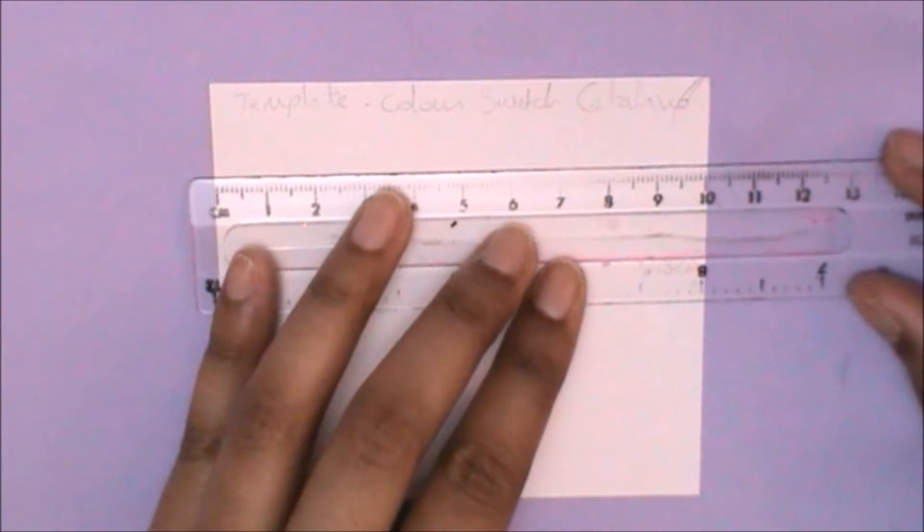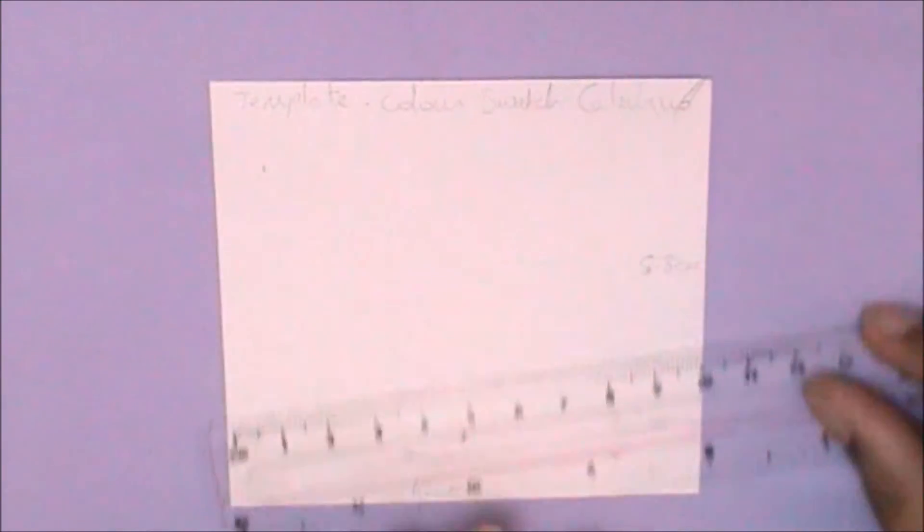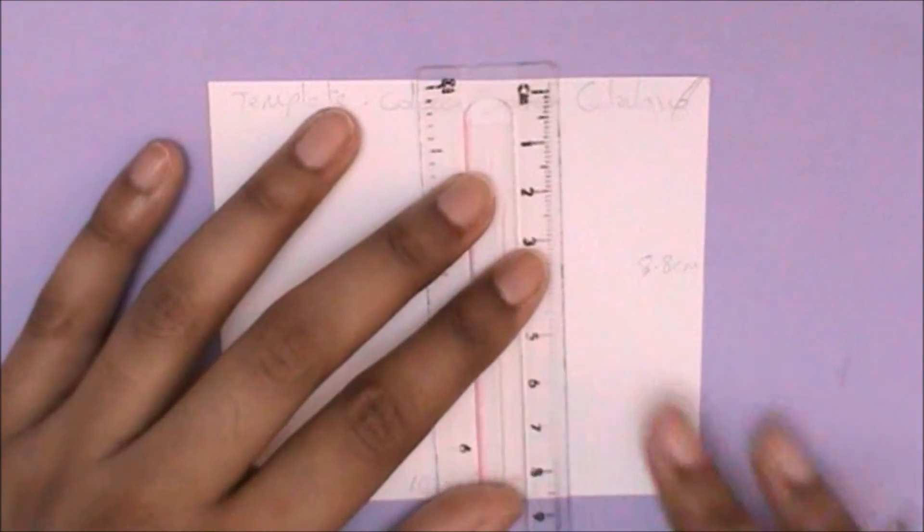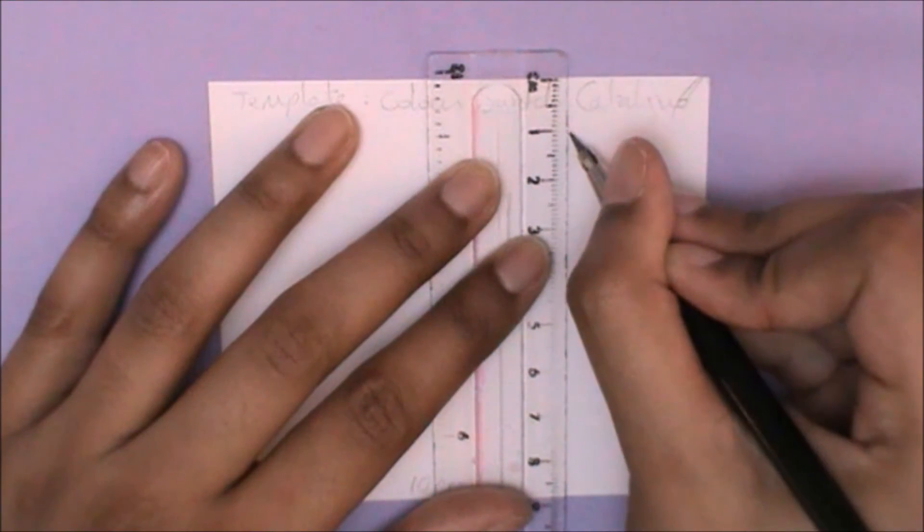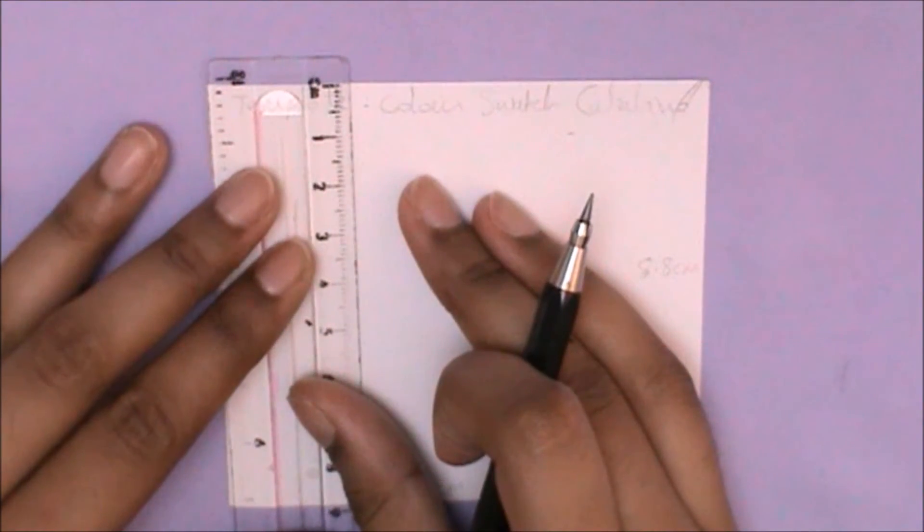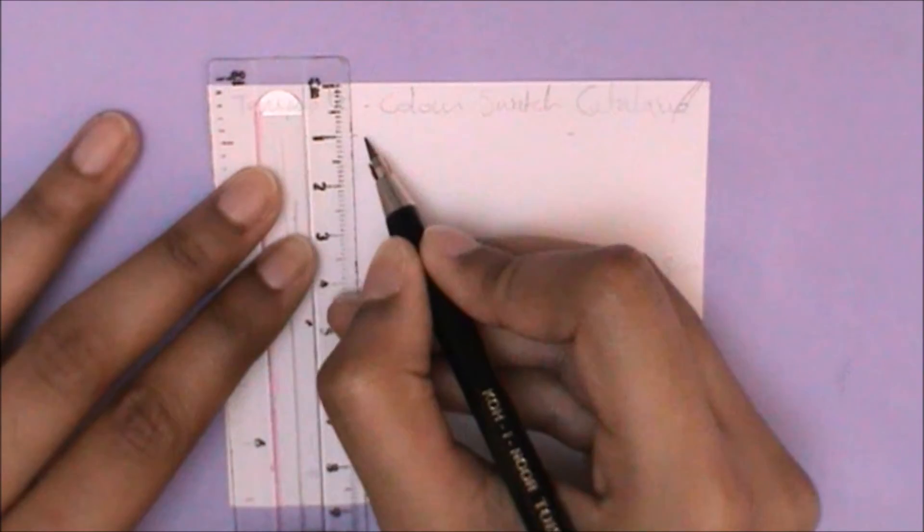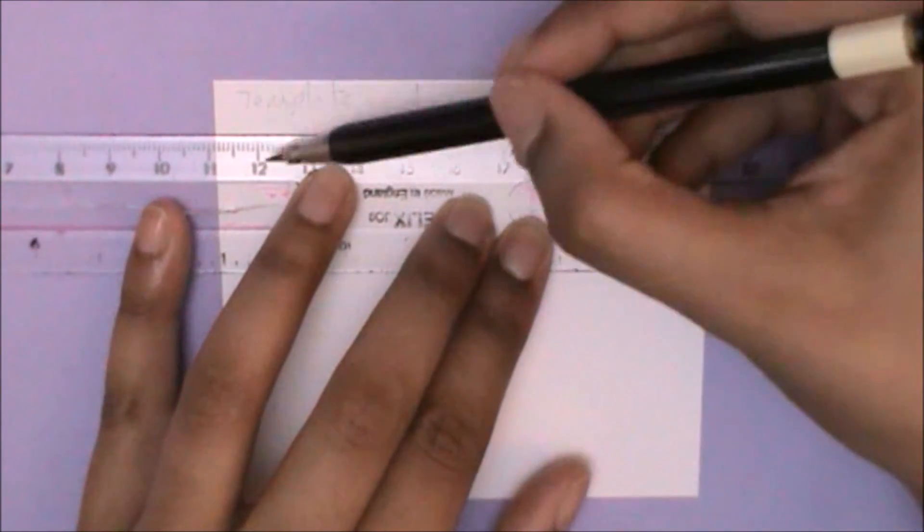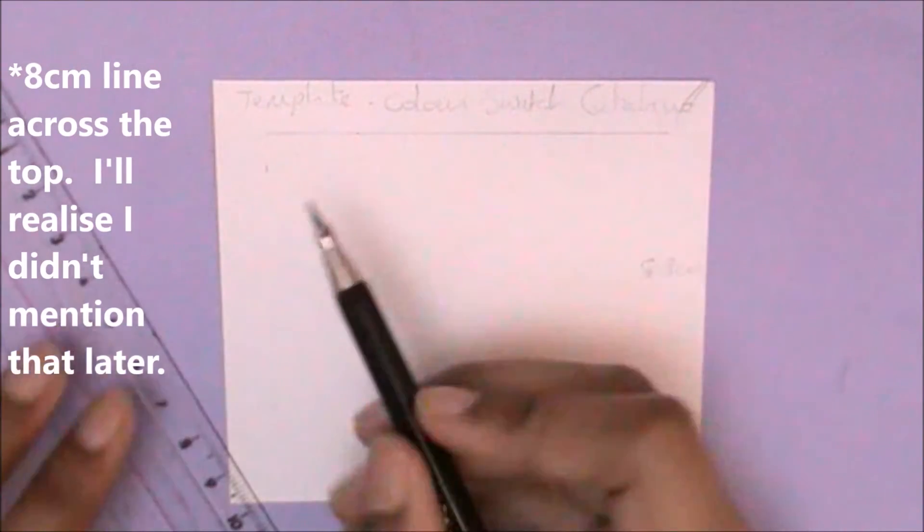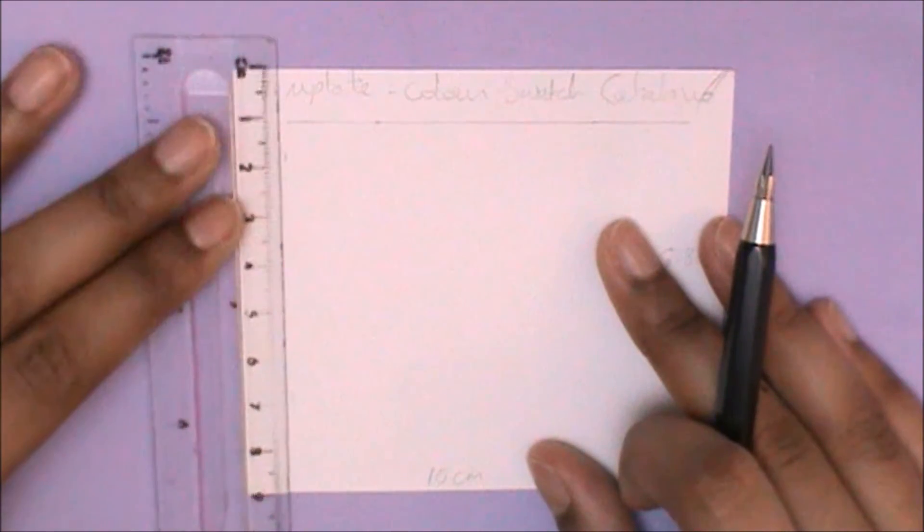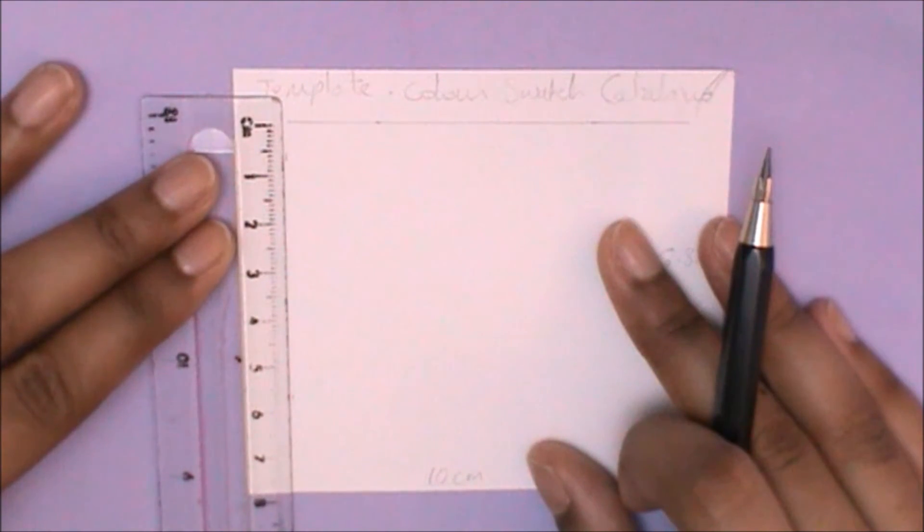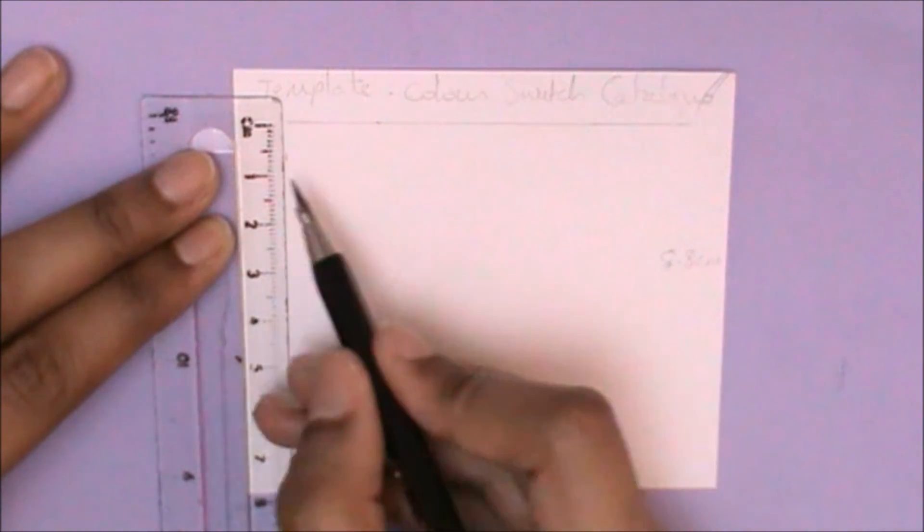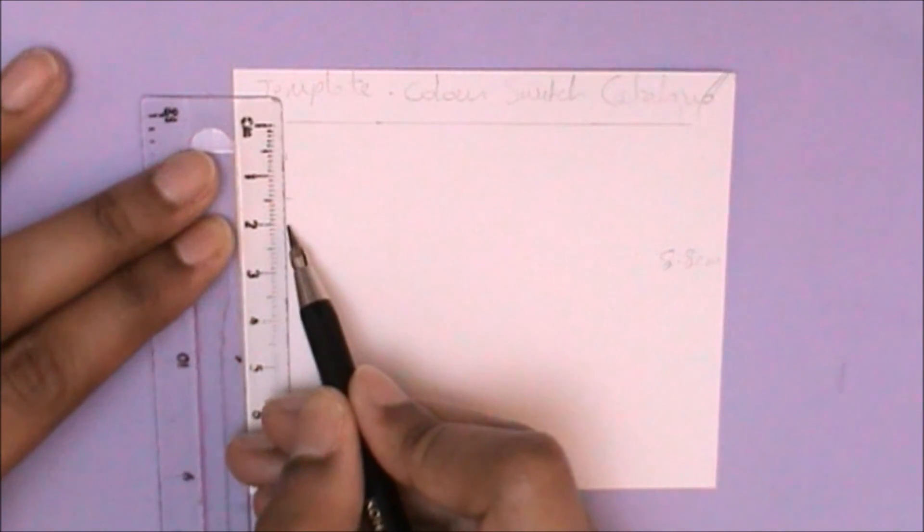For the measurements, I'm going to begin by marking a centimeter in, and then down here I'll mark a centimeter in as well. Then I'm going to mark a centimeter down and over here as well. I'm going to draw that line across to the top.